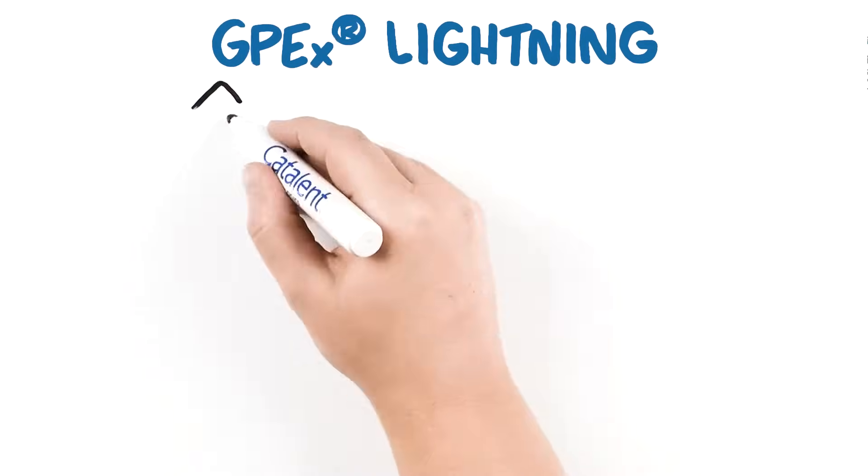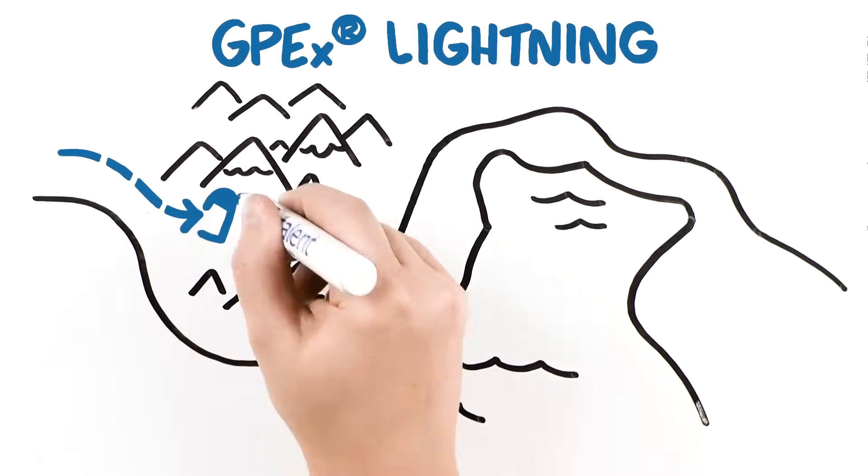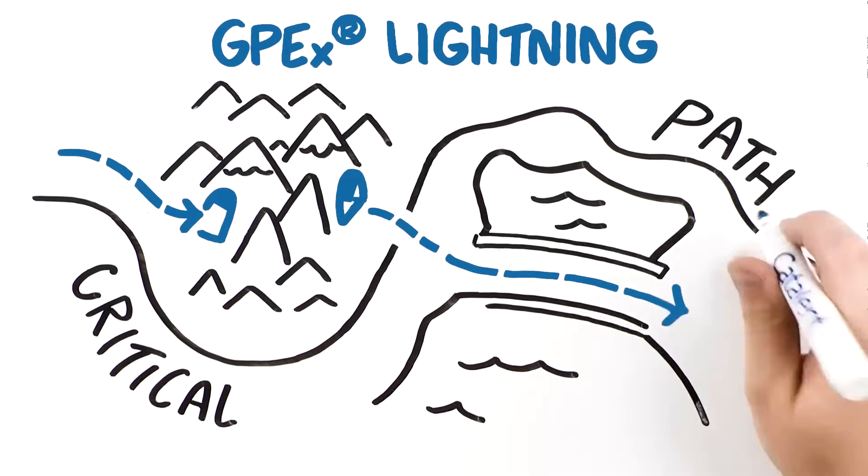The GPX Lightning platform combines unique technologies into one process, while enabling time-consuming steps to be removed from the critical path.